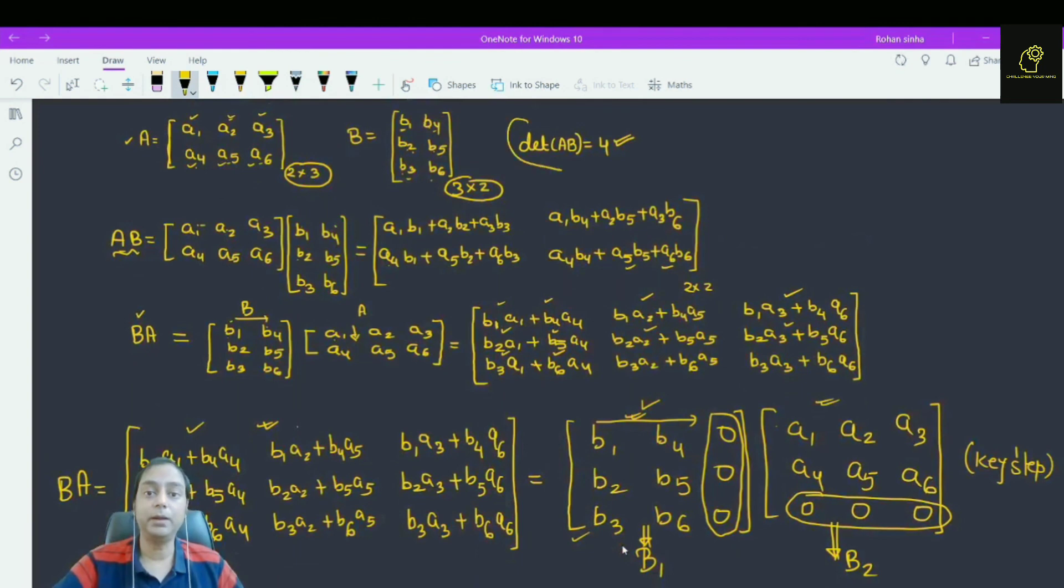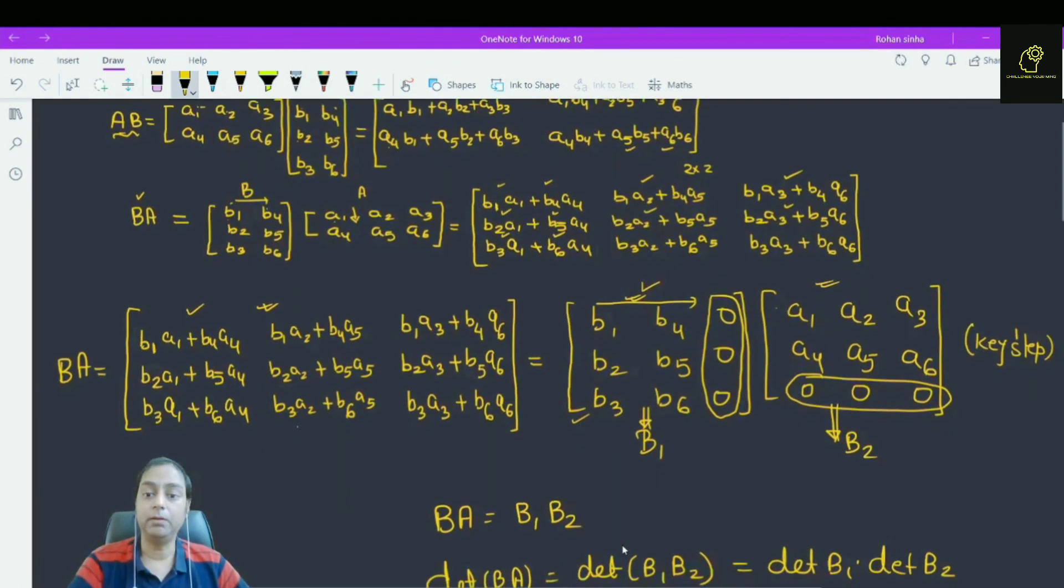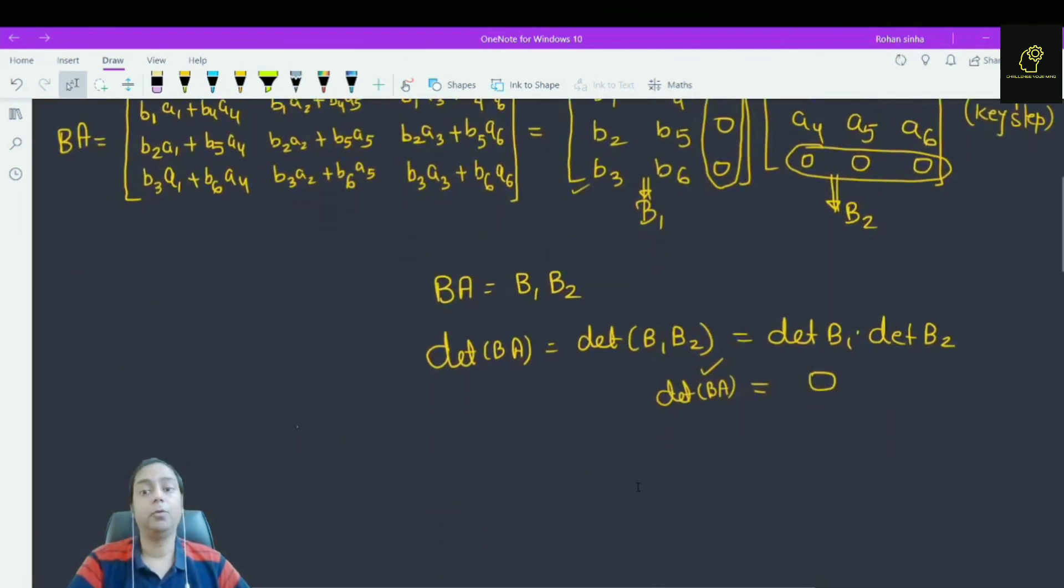Also, a very interesting thing: this determinant of BA is independent of this AB determinant. So, whatever AB be given, the value of this determinant remains always 0.